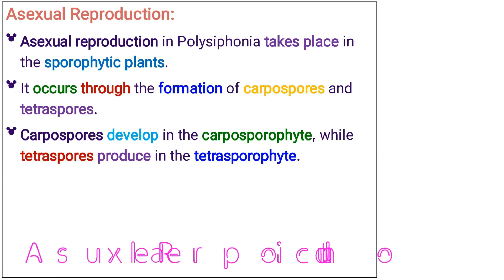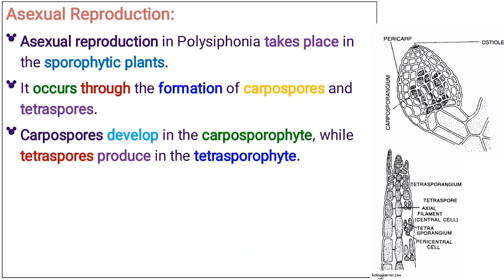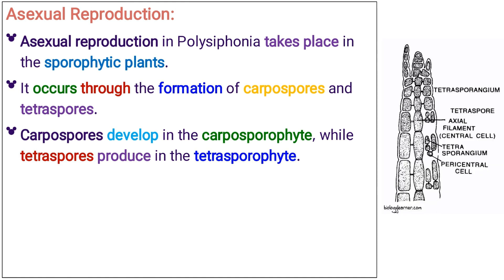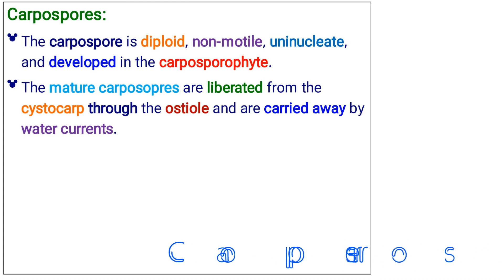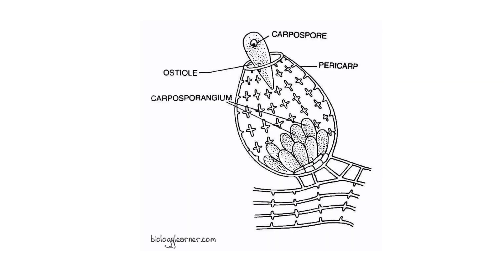Asexual reproduction in Polysiphonia takes place in the sporophytic plants through the formation of carpospores and tetraspores. Carpospores develop in the carposporophyte, while tetraspores are produced in the tetrasporophyte. The carpospore is diploid, non-motile, uninucleate, and developed in the carposporophyte. The mature carpospores are liberated from the cystocarp through the ostiole and are carried away by water currents.